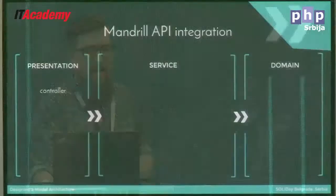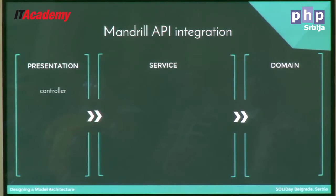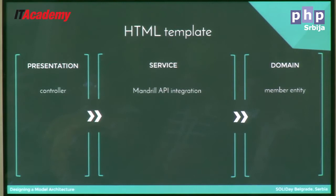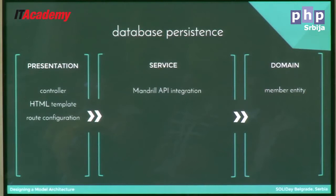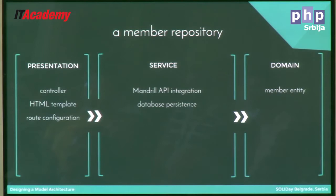So if we start out with our layers: where might we find a controller? Presentation. A Mandrel API integration? Service layer. A member entity? Domain. An HTML template? Presentation. Route configuration? Presentation. Database persistence? Service layer. And a member repository? That's kind of tricky, right? Let's take a look at a member repository. The idea of the repository pattern is it's a conceptual collection of all of something in your system. A member repository allows you to pull back members that are available, filter them, take a member object and pass it in.